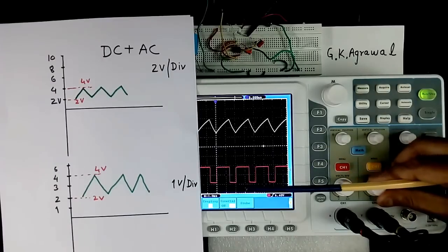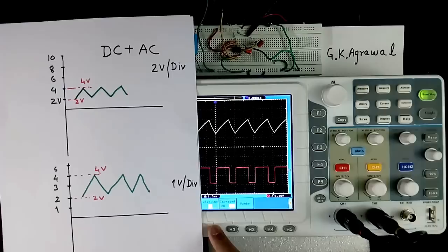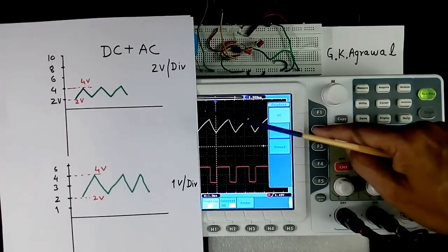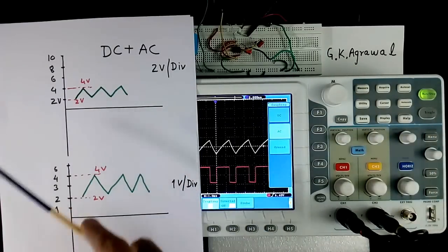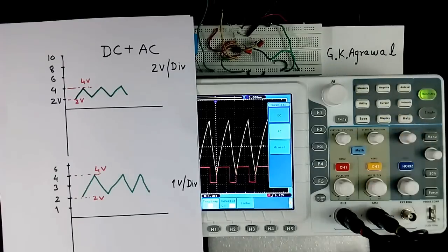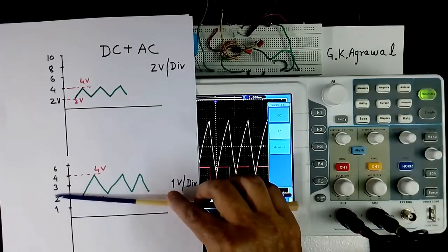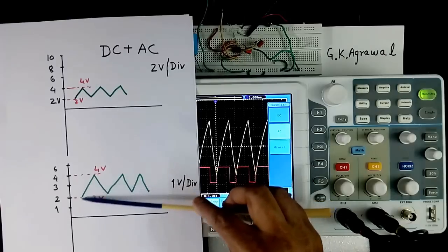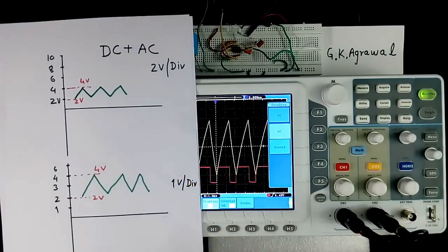This is coupling. I select AC coupling. Now DC has gone. Only AC. Now if you make like this, the DC problem will not be there. This AC alone you can extend the scale.